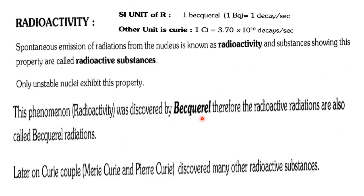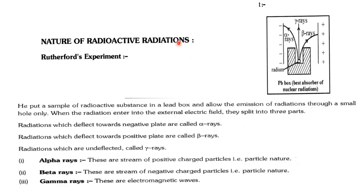Radioactivity was first discovered by Becquerel, and later many other radioactive substances were discovered by Marie Curie and Pierre Curie. The unit for radioactivity is called the becquerel, and another unit for radioactivity is the curie.